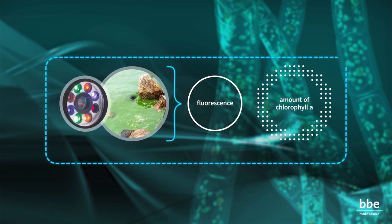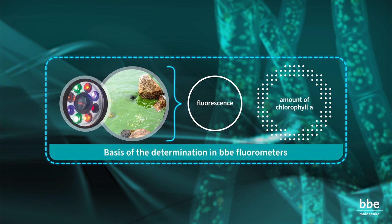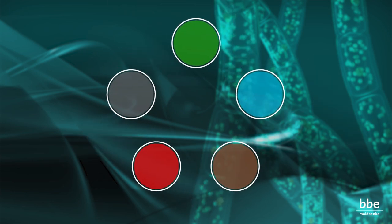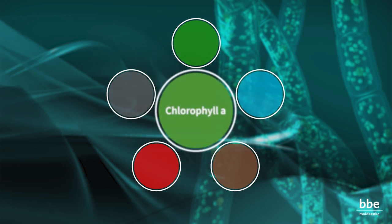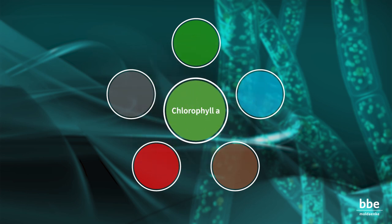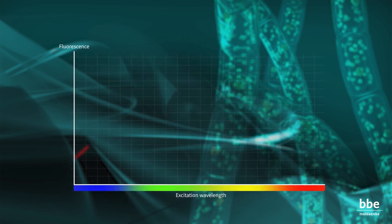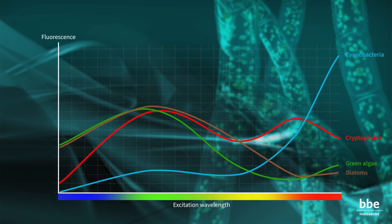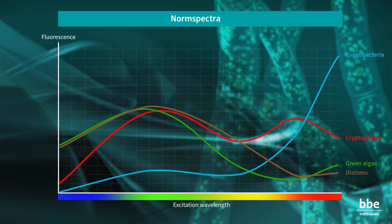This method is the basis of the determination in the BBE fluorometers. Five main spectral classes can be identified, which are related to the different algae pigments. These pigments cooperate with chlorophyll A to transfer the energy of the trapped light. Each class has a characteristic pattern of fluorescence at defined excitation wavelengths, termed the norm spectrum, which enables the fluorometer to identify different algae in a sample.